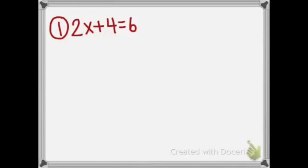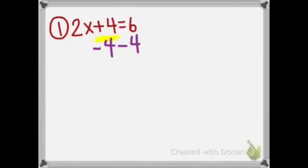The first kind says 2x plus 4 equals 6. The first step said distribute — there's nothing to distribute. The second step said get rid of large fractions — there are no large fractions either. So we're going to start with the third step: add or subtract the term without the variable. That term without the variable is the plus 4. The opposite of plus 4 is minus 4, so I'm going to subtract 4 on both sides of the equal sign.